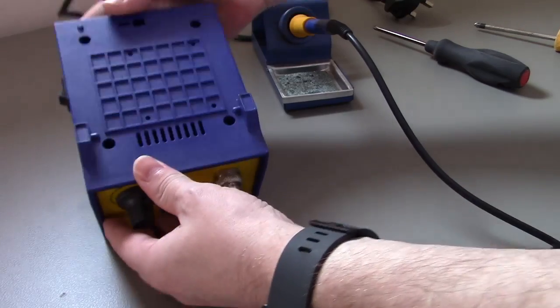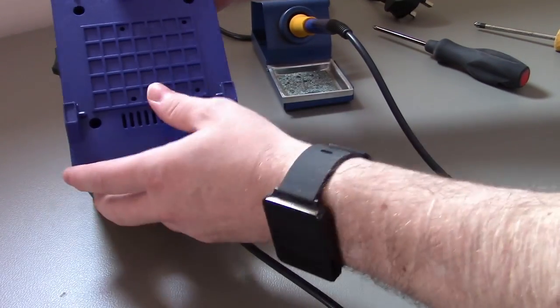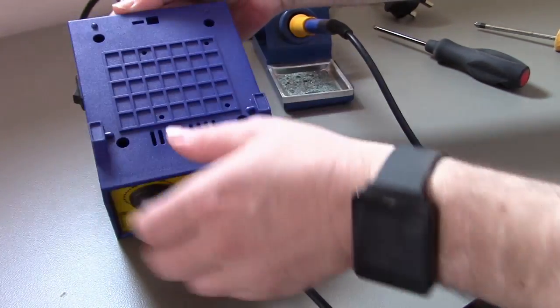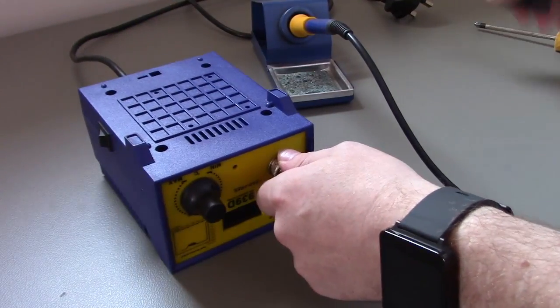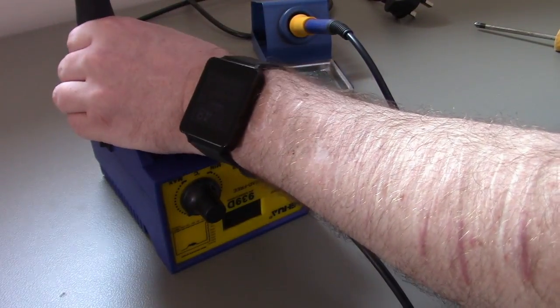All right, so to get inside this we've got four screws at the bottom on the bottom of the unit, so we'll take those out and see what we can find inside.